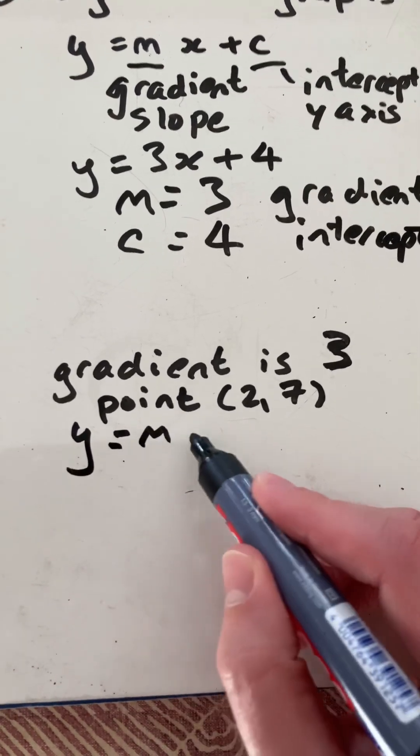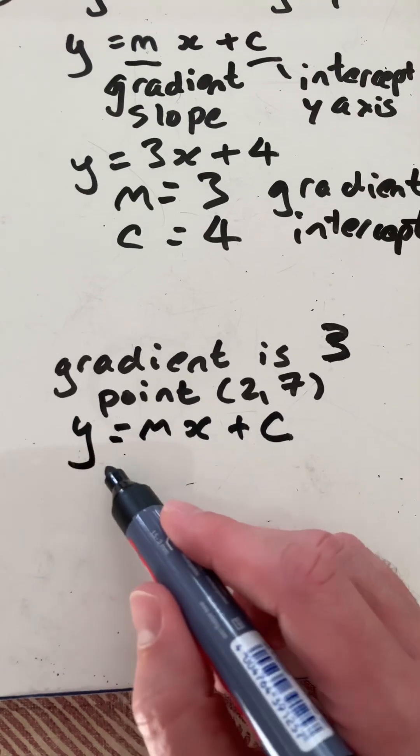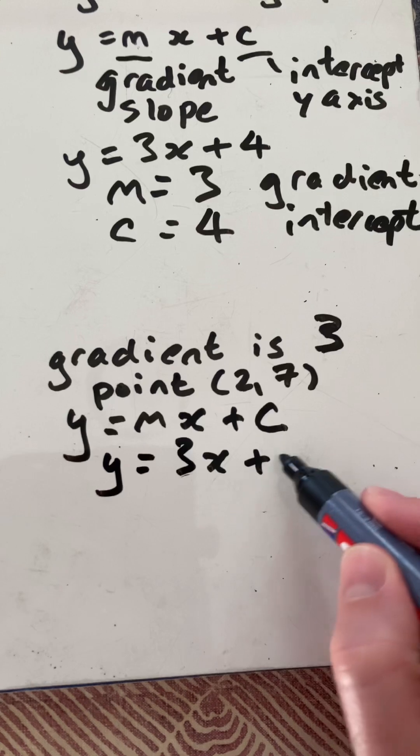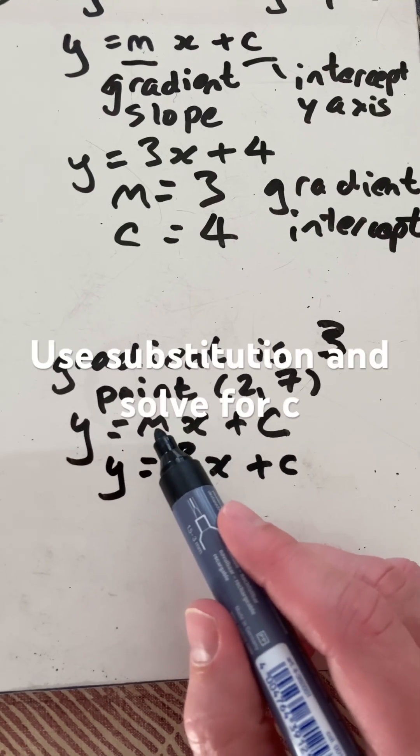So I'll start with the general form, y equals mx plus c. I'm given 3 with the gradient, y equals 3x plus c. Have a look for other videos about how you actually can calculate m given 2 points.